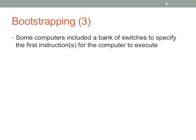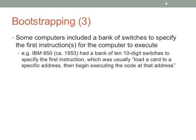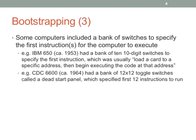Sometimes you had a bank of switches. This was common — either to specify the first instruction to execute, or the first N instructions. The IBM 650 from 1953 had a bank of 10 ten-digit switches — 100 switches total — that would be the first instructions to start the computer running. They would typically say: go get a punch card's worth of data, load it into a specific address, and start running. The CDC 6600 had 12 by 12 toggle switches, called the dead start panel, providing the first 12 instructions for the computer to run.